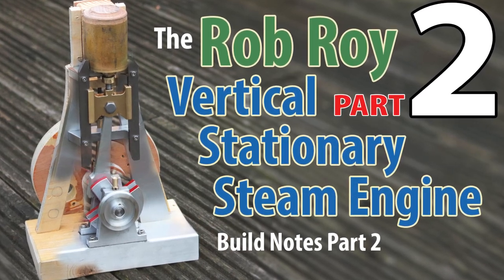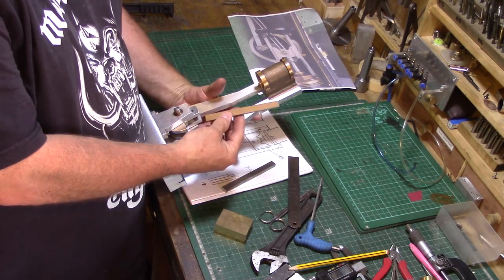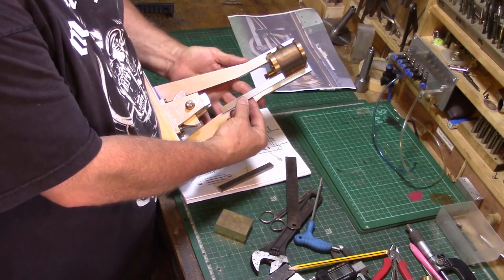Welcome back to part two of my Rob Roy vertical steam engine build. In this episode I need to build a crosshead and a pair of crosshead slide guides to connect to the piston rod.